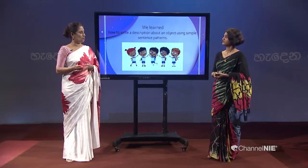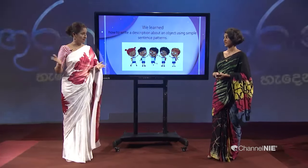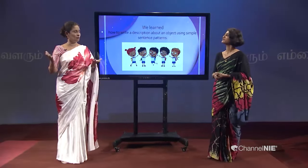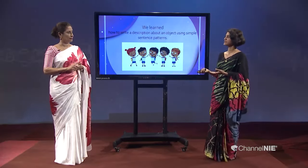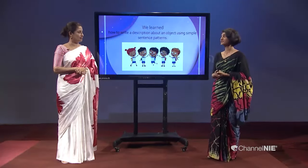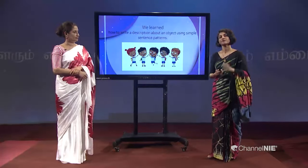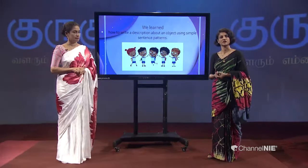Now you know how to write a small description about any object. Before we wind up today's lesson, let me remind you: you learned how to describe objects using simple sentences. For size, use words like tiny, small, medium, big, enormous. For colors, use red, yellow, blue, and more. For shape, use shape adjectives — circular, square, rectangular. For material, use words like wood, leather, metal, glass, and plastic. Using these words, you can write a simple sentence to describe each feature.